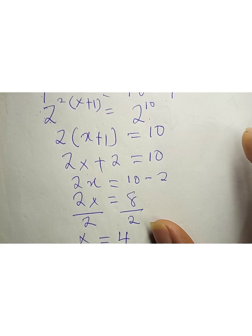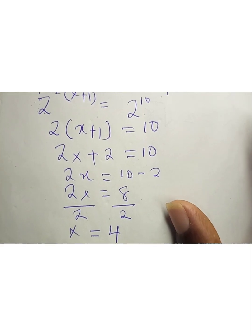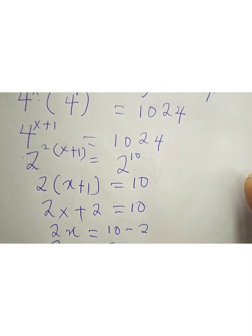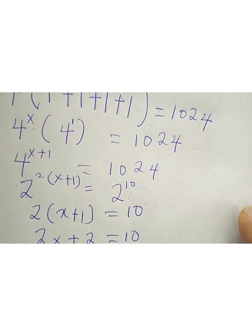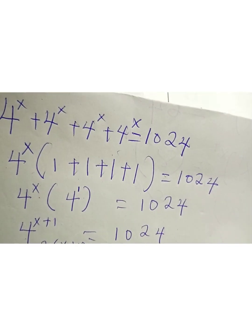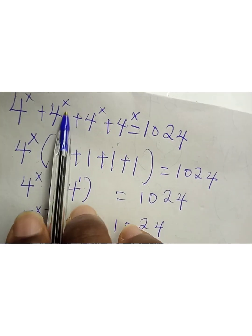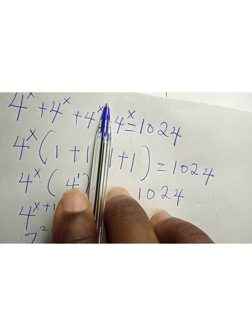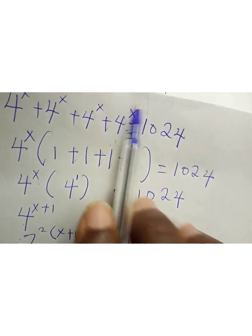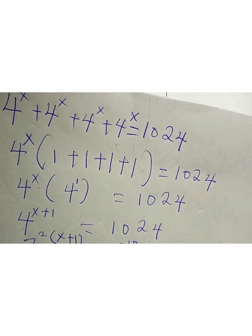That is the answer. You can substitute this answer back into the original equation to verify. By substituting 4^4 + 4^4 + 4^4 + 4^4, it will give you 1024.